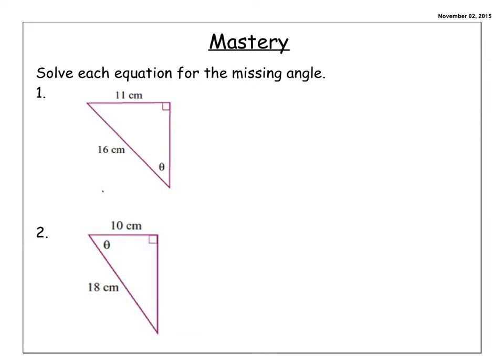For our mastery ticket, we have two right triangle questions where instead of having a missing side, you actually have a missing angle. The symbol shown is the Greek symbol theta, which is the symbol for an angle when talking about trig. Sometimes I use X, sometimes I use theta — it just depends on the problem, so please don't get confused by that.